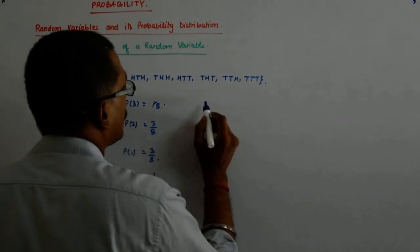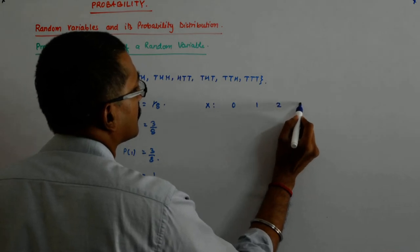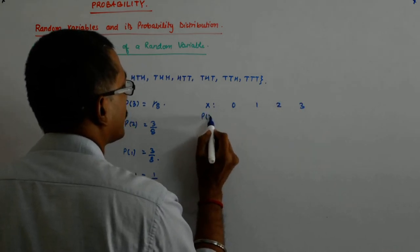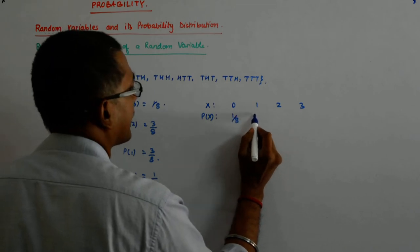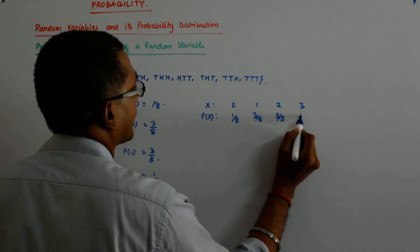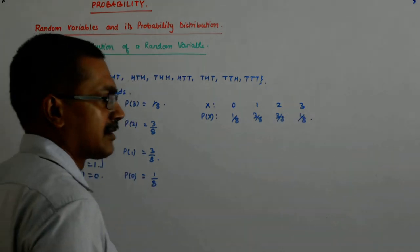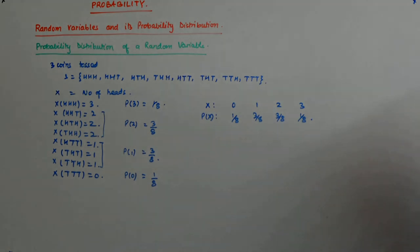Now, if you start writing it like this: 0, 1, 2, 3. And here you start writing your p(x), which is 1 by 8, 3 by 8, 3 by 8, 1 by 8. What should be the sum of this? 1, naturally. Because when you sum it, you are covering all the possibilities.